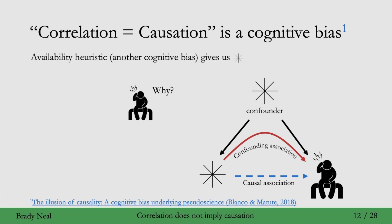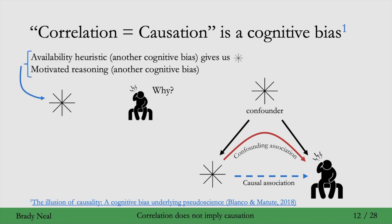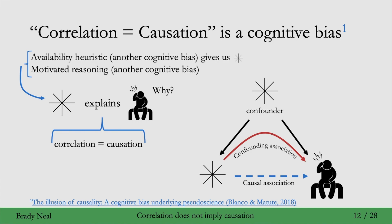Say you want to explain why you have a headache. You have a headache and you're asking why, and how can you not have a headache in the future? The way we might do this is come up with some star via the availability heuristic or motivated reasoning. And given that that star is associated with our headache, we'll say that explains the headache, using the correlation equals causation cognitive bias.